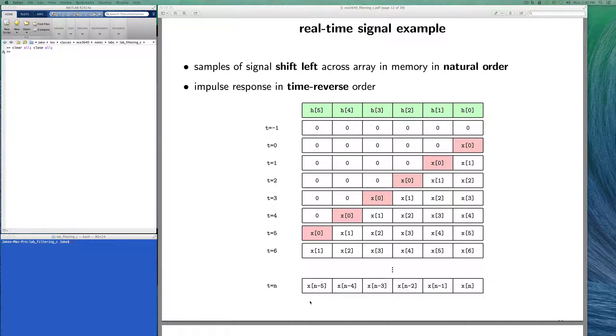At time n, this is what we would have in the array. Notice that the samples stored in the array are in what I would call natural order because we have the old samples on the left and the newest sample on the right. If you multiply the values in the green array at the top times the values in this array at the bottom and write that down in summation notation, you will have exactly the convolution formula.